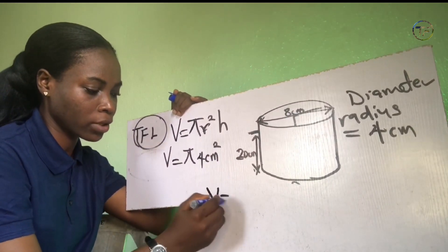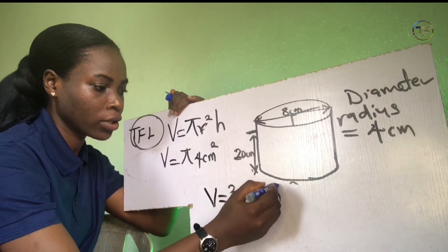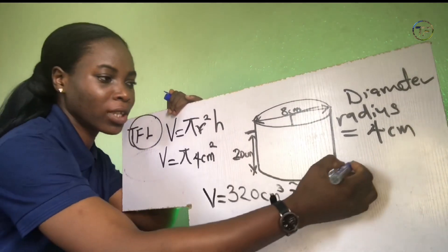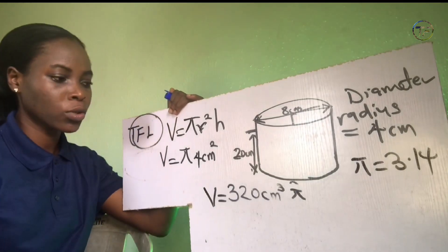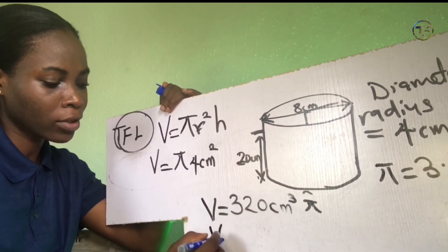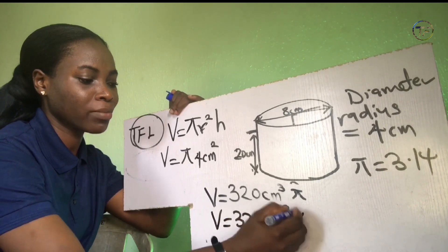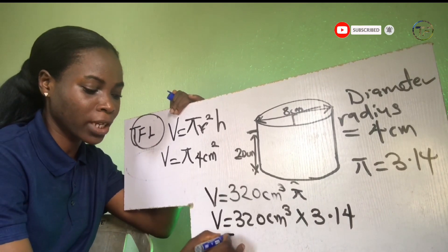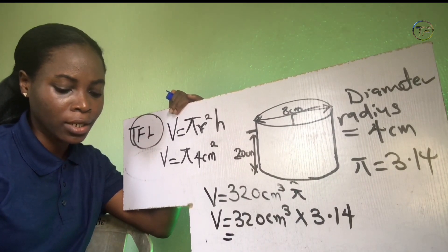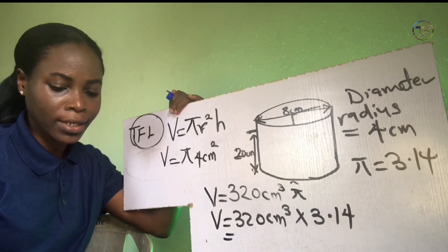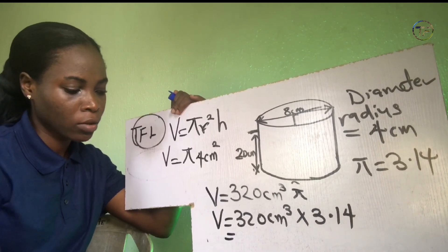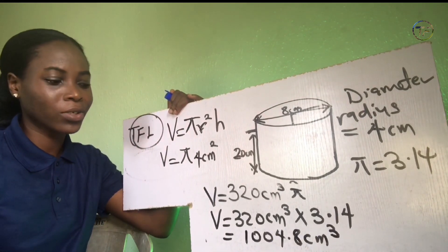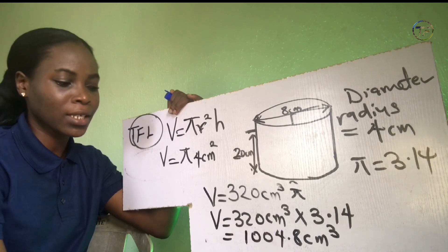So: Volume = 320 cm³ × 3.14, which is the universal value of pi. Multiplying 320 by 3.14 equals 1,004.8 cm³. So this is our volume in cubic centimeters.